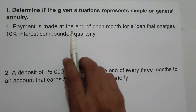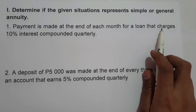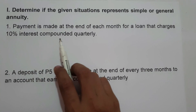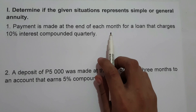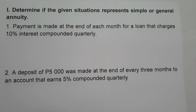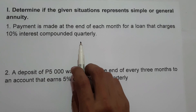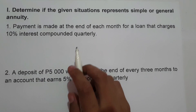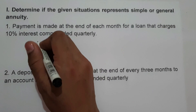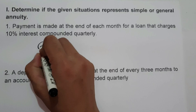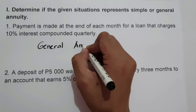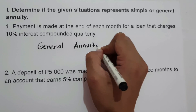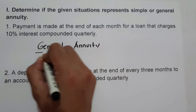On number one, payment is made at the end of each month for a loan that charges 10% interest compounded quarterly. Since the payment interval is the end of each month, which is not equal to the compounding interval which is quarterly, therefore the given situation represents general annuity.